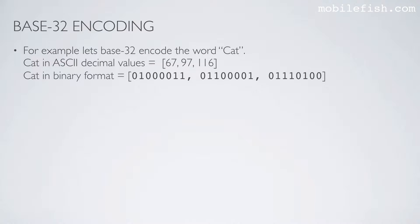I will now explain how base32 encoding works. For example, let's base32 encode the word Cat. This is the word Cat in ASCII decimal values. And this is the word Cat in binary format.